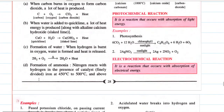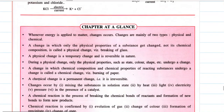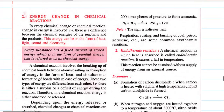As I told you, this is a small part — just one page and some more and the chapter is over. The content of this part of the chapter is regarding energy change in chemical reactions. In every chemical change or chemical reaction, a change in energy is involved — that is, there is a difference between the chemical energies of the reactants and the chemical energies of the products.